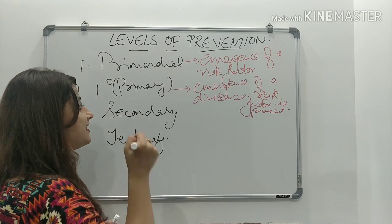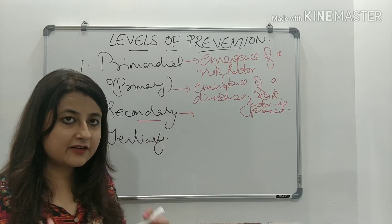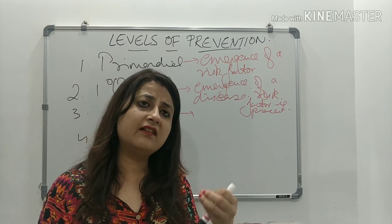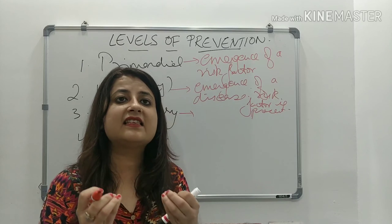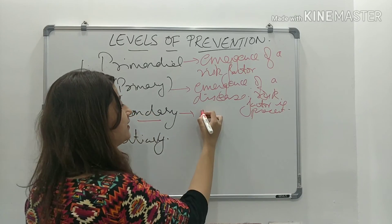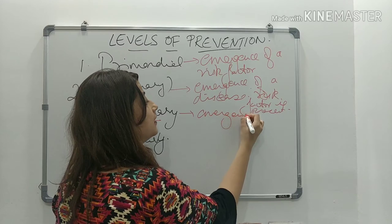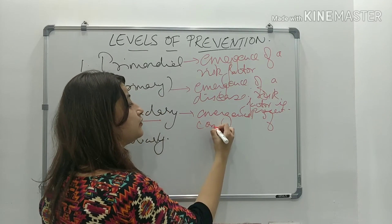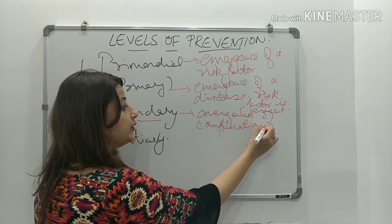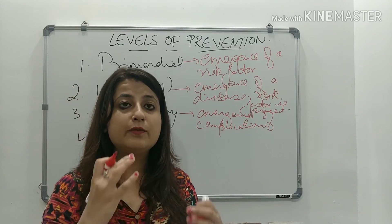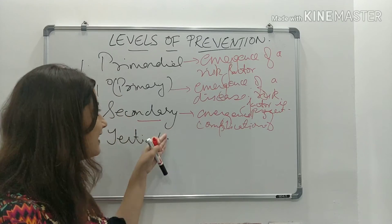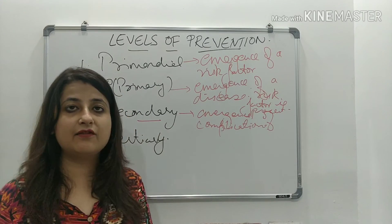In secondary prevention, the disease is at its very early, incipient stage and we are trying to prevent the emergence of complications. We would not want the disease to progress to a stage beyond which it becomes irreversible. That is the secondary level of prevention.